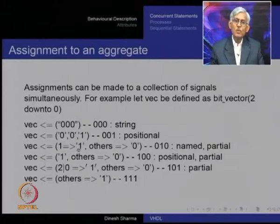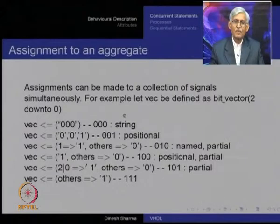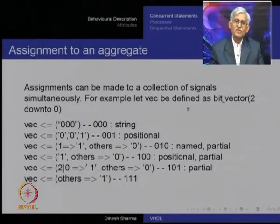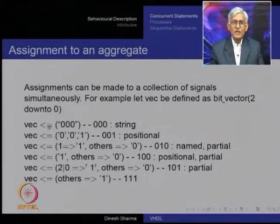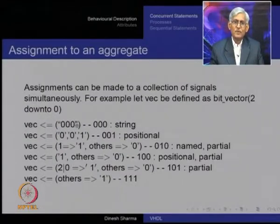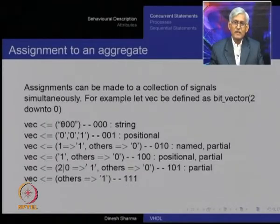Assignments need not be made to a single signal; they can be made to a collection of signals simultaneously. For example, let 'vec' be defined as a bit_vector 2 down to 0, meaning it is a 3-bit quantity. You can assign to 'vec' the string "000" in double quotes, meaning each element is treated as a character like '0' in single quotes, and each bit of vec will be assigned a 0.